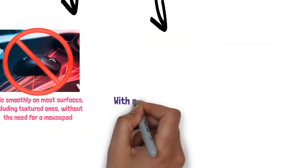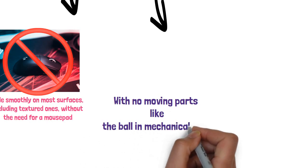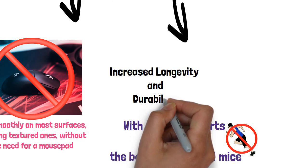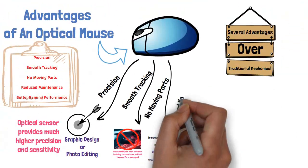No moving parts. With no moving parts like the ball in mechanical mice, there's less wear and tear, leading to increased longevity and durability.